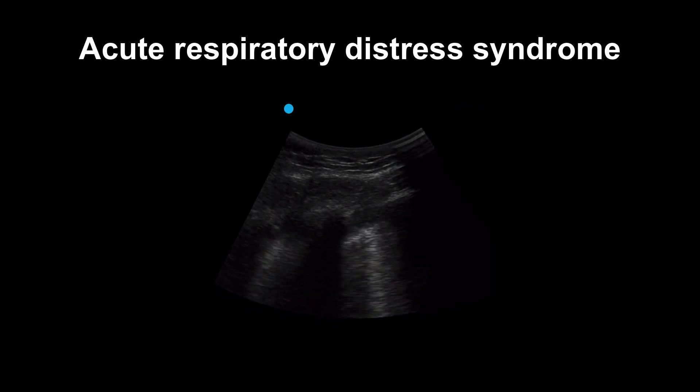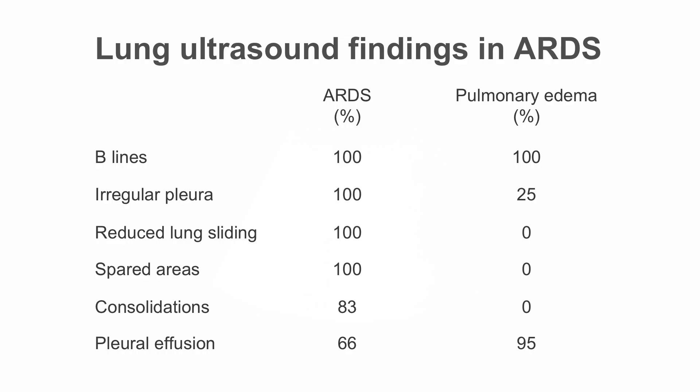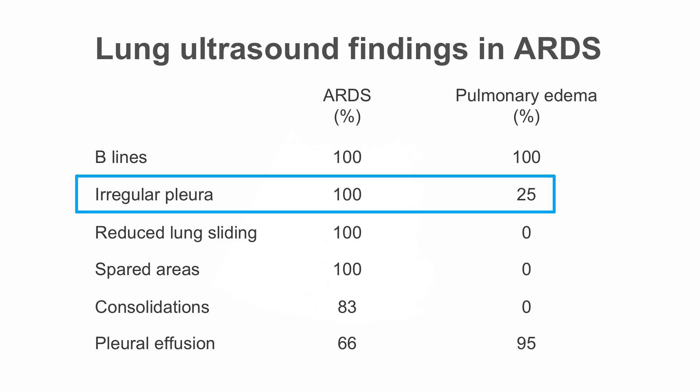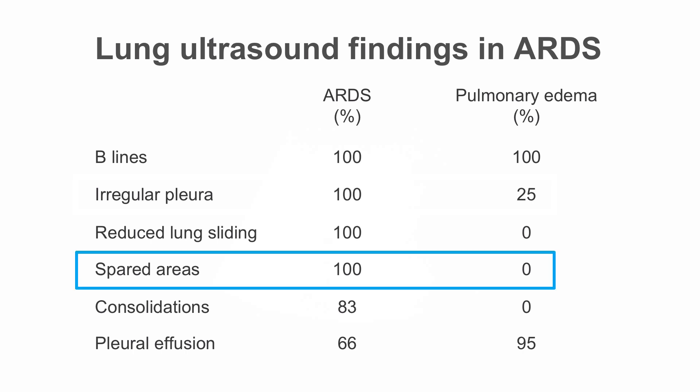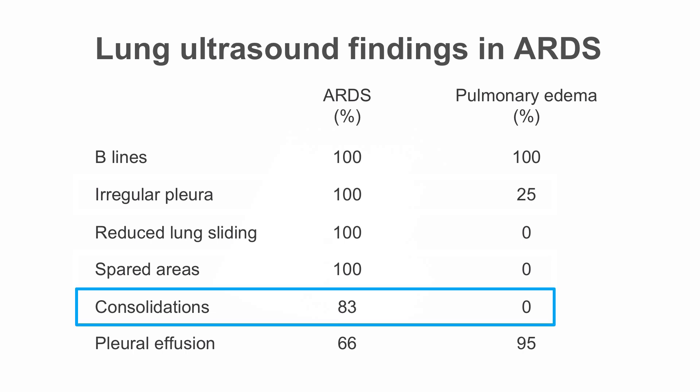So how do we tell them apart? There are a variety of features that help us distinguish ARDS. Looking at the data comparing lung ultrasound findings, there are a few important differences. First, in ARDS there's frequently irregular pleura — it may appear thickened or irregular. ARDS is also defined by areas of spared lung on lung ultrasound, which is a very helpful way to distinguish it from pulmonary edema. Finally, it's very common to have small subpleural consolidations that can be seen in ARDS.